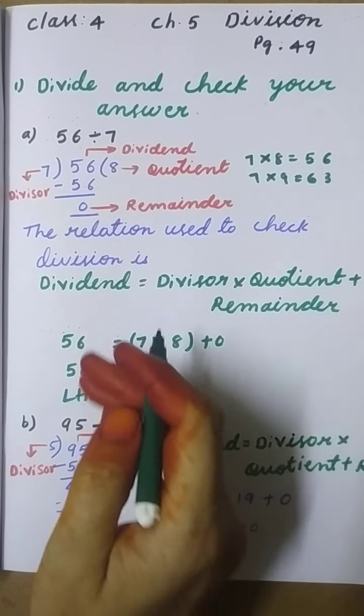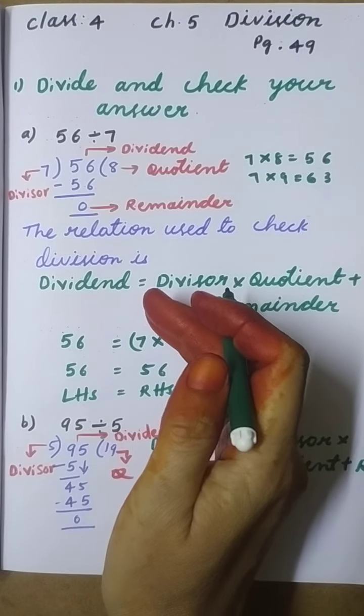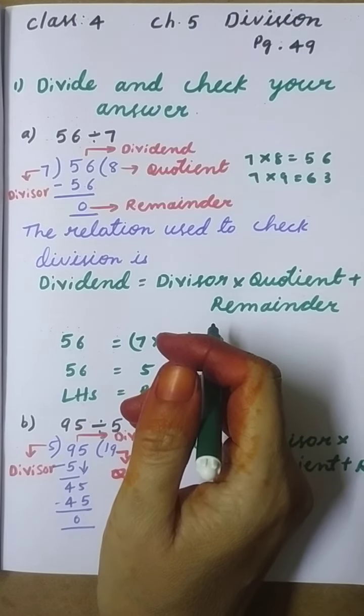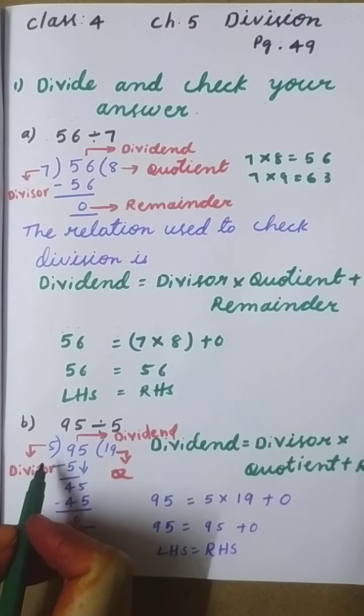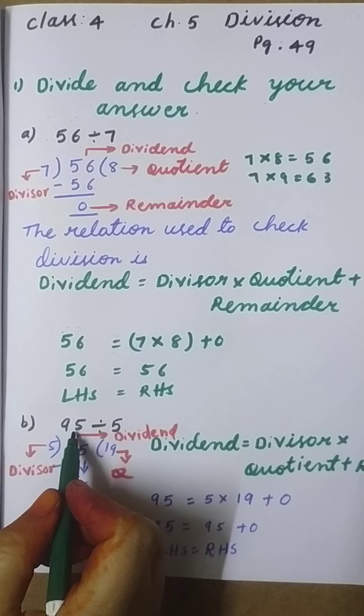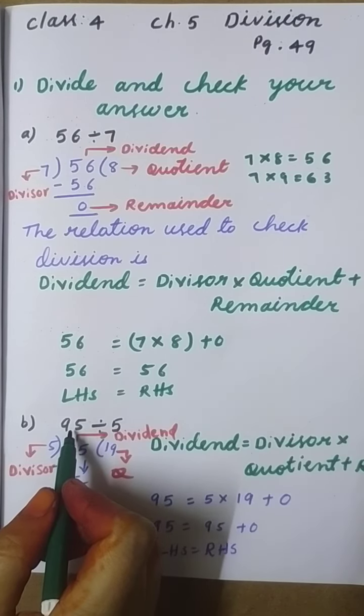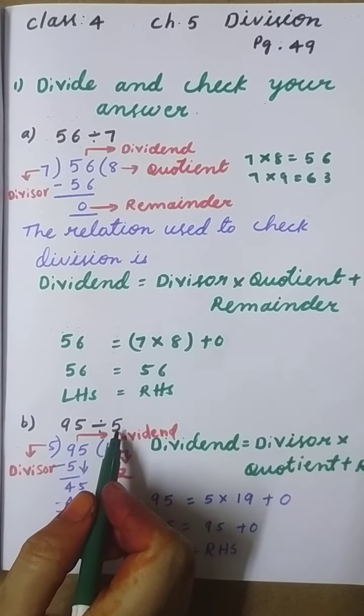That means left-hand side equals right-hand side. We have checked the answer. Now next one: b) 95 divided by 5. Here we write 95 in the middle - this is the dividend. 5 is the divisor.